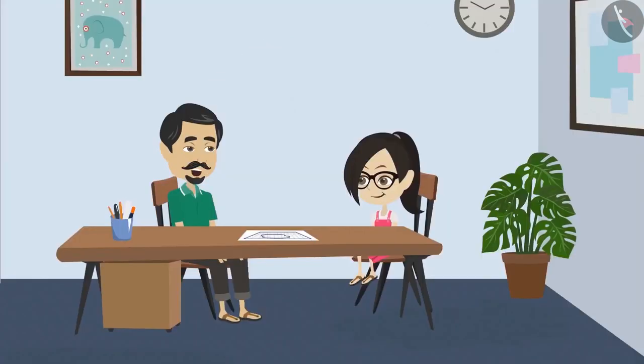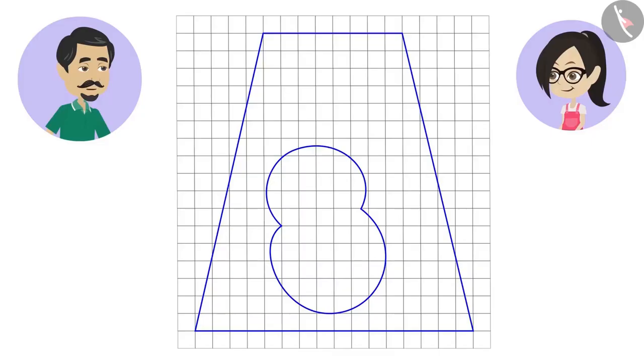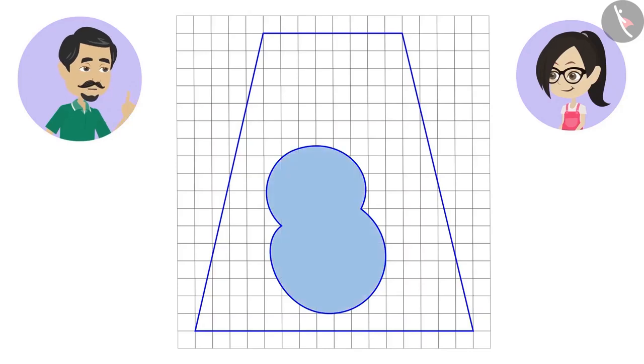So, I took the help of an engineer to make a map of our farm and the pond to be built in it. Look, this is the map of our farm and the pond is shown in this. I want our pond to be one-fourth of the size of the field.